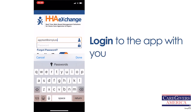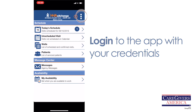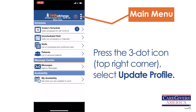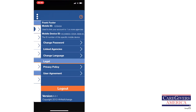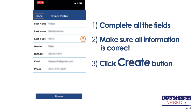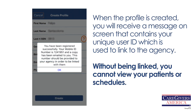Log into the app with your credentials. Press the three dot icon in the upper right corner and select Update Profile. Complete all the fields, make sure all information is correct, then click Create. When the profile is created, you will receive a message on screen that contains your unique user ID, which is used to link you to the agency.